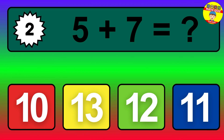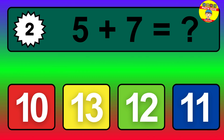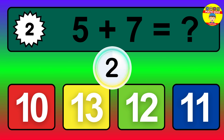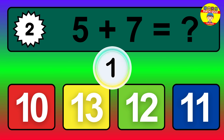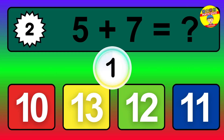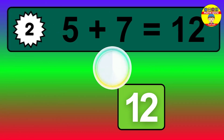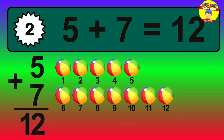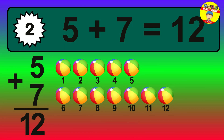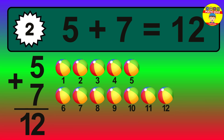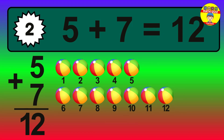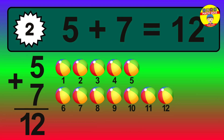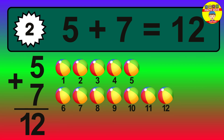Question 2. 5 plus 7 equals what? The answer is 5 plus 7 is 12. Let's count it: 1, 2, 3, 4, 5, 6, 7, 8, 9, 10, 11, 12.